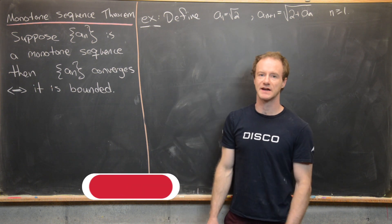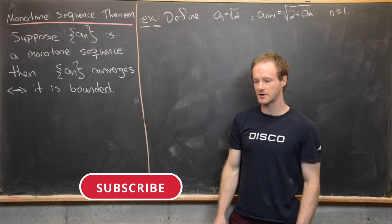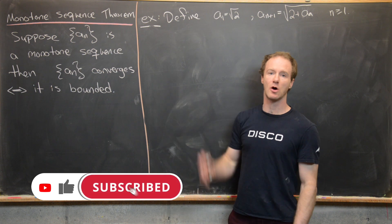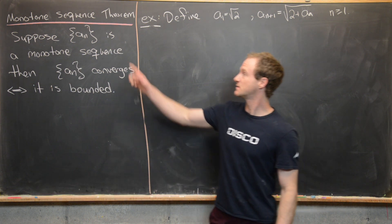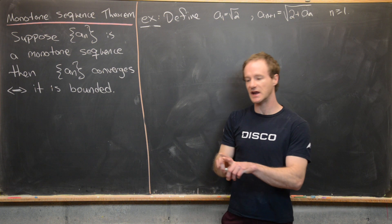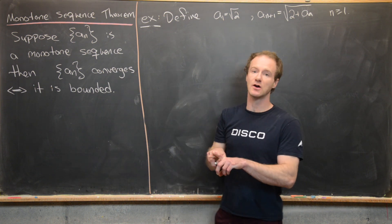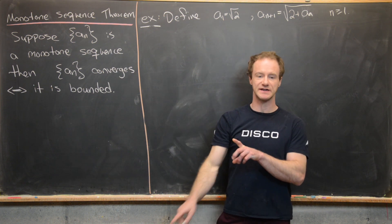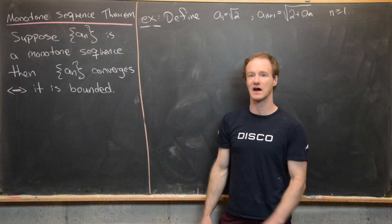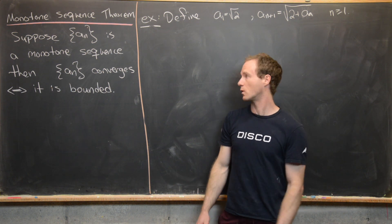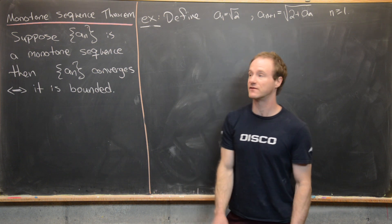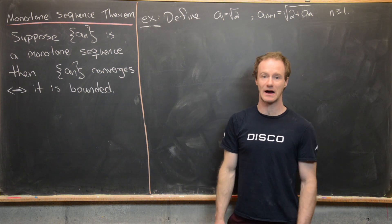In a previous video we proved the monotone sequence theorem. Now we want to look at an example. So let's recall what the theorem says. Suppose that a sub n is a monotone sequence — in other words, it's increasing or decreasing, not both. Then a sub n converges if and only if it is bounded.